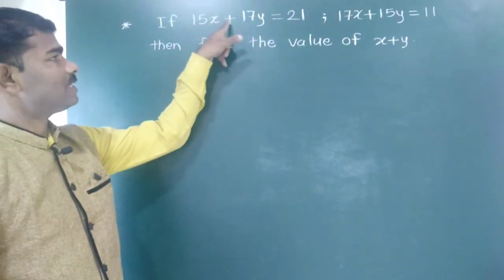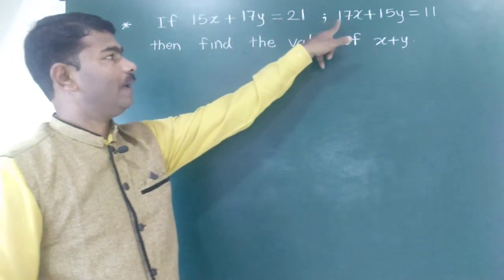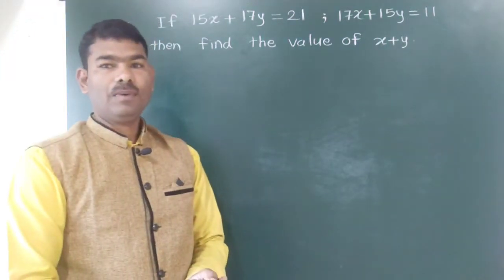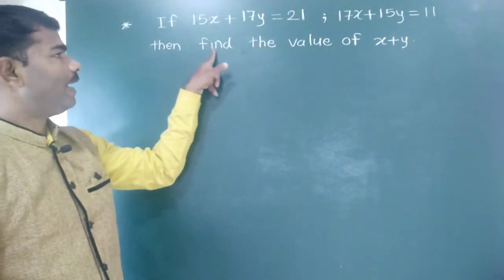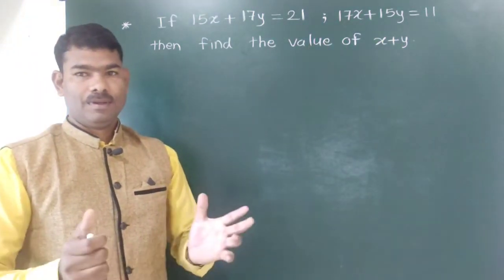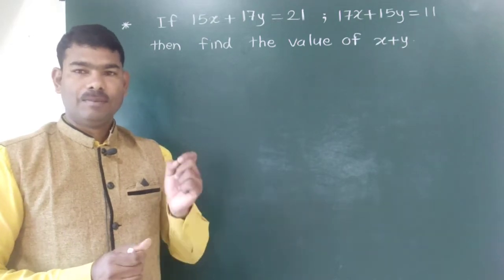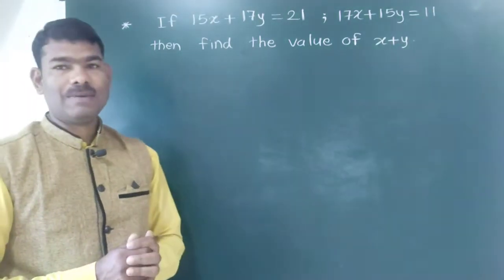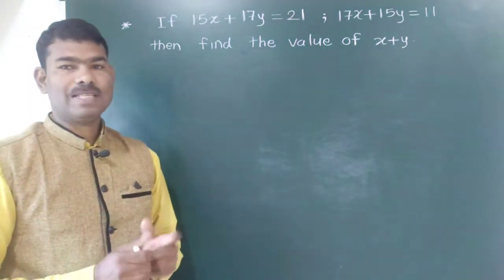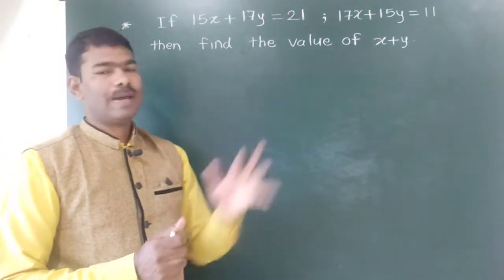If 15x plus 17y is equal to 21 and 17x plus 15y is equal to 11, then find the value of x plus y.